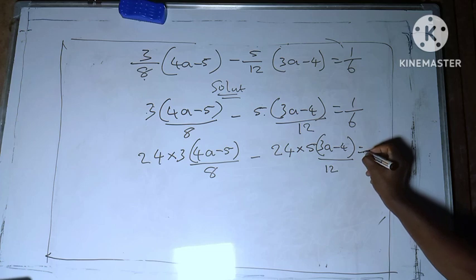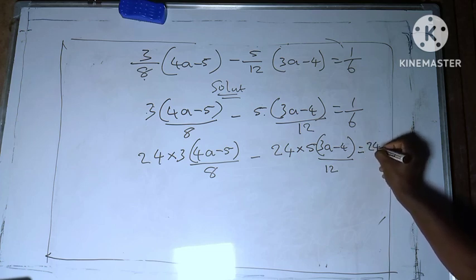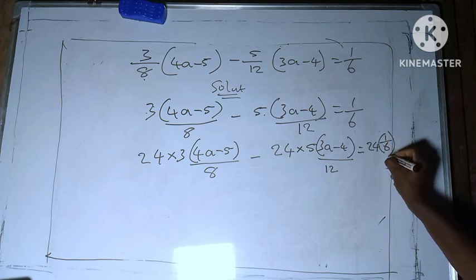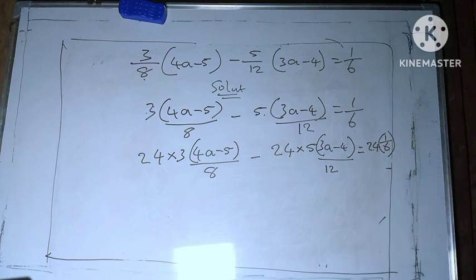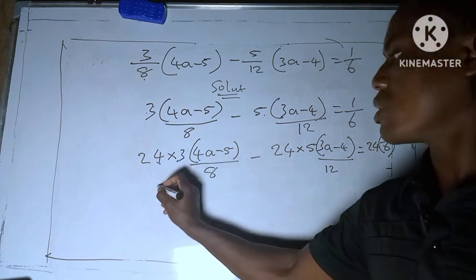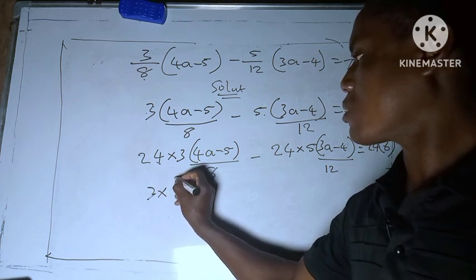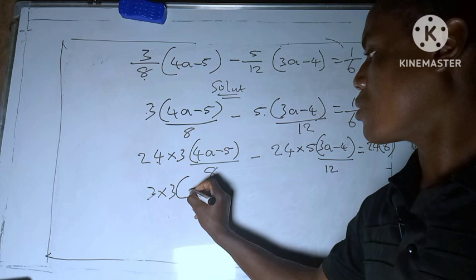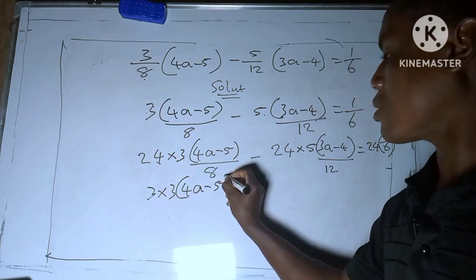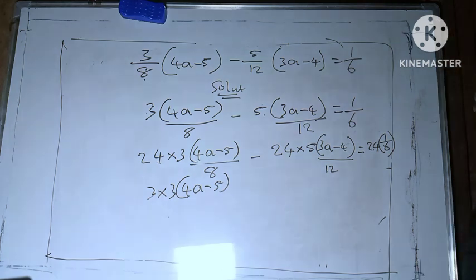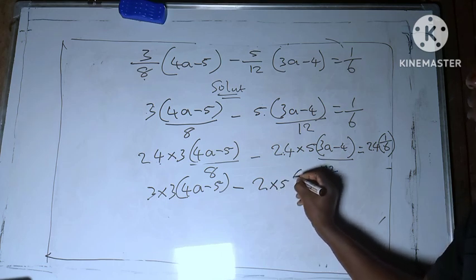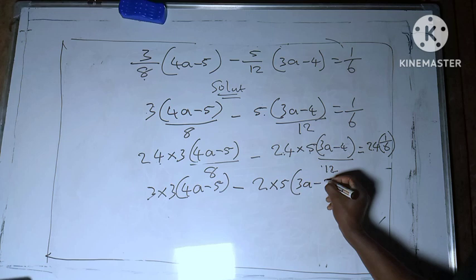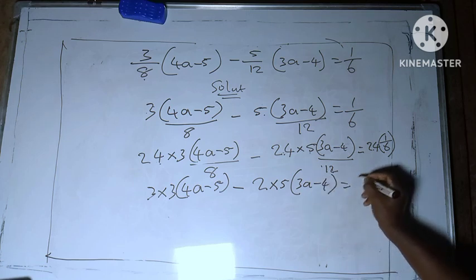Multiply by 5 bracket 3a minus 4 over 12. The same thing here, 24 multiply by 1 over 6. So 24 divided by 8 will give us 3. 24 divided by 12 gives 2 times 5 bracket 3a minus 4, equal to 24 divided by 6 to give you 4.